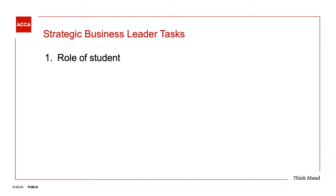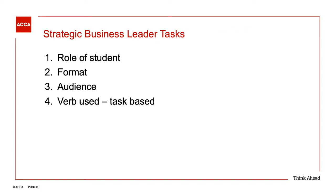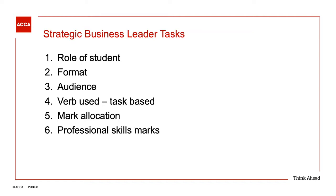The six steps are: what role are you asked to play? What format is the answer required in? Who are we addressing, i.e. who's our audience? What verb is being used — what's it asking us to do? How many marks are being awarded? And what are the professional skills marks being awarded for? If we always ensure we ask these six questions before developing our answer plan, the chances of getting something wrong will be minimized.